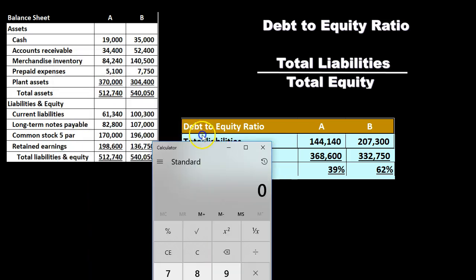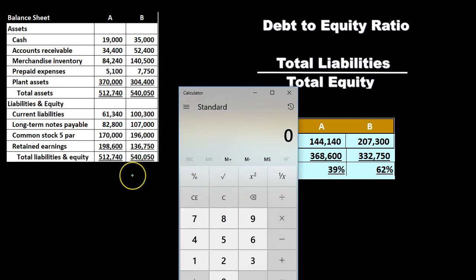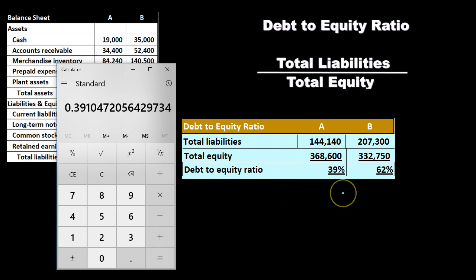For the debt-to-equity calculation on company A, total liabilities are 61,340 plus 82,800, and total equity is 170,000 plus 198,600. We divide 144,140 by 368,600, which gives us 0.39. We want this ratio to be as low as possible — a lower numerator relative to the equity denominator is better. So company A is lower and therefore better in this regard.